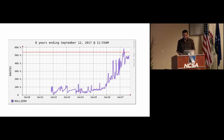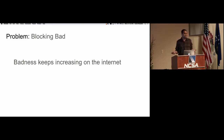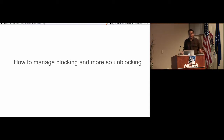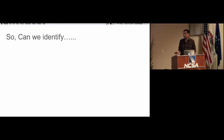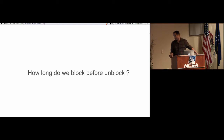The problem is: blocking bad activity keeps increasing on the internet, and there's no surprise in that finding. So how do you manage blocking, and more so unblocking? Can we unblock something today, tomorrow, six months down the line? How do we figure it out? Can we identify are blocked IPs coming back, or are they just blocked once and gone forever? Can we identify how long we block before we unblock?